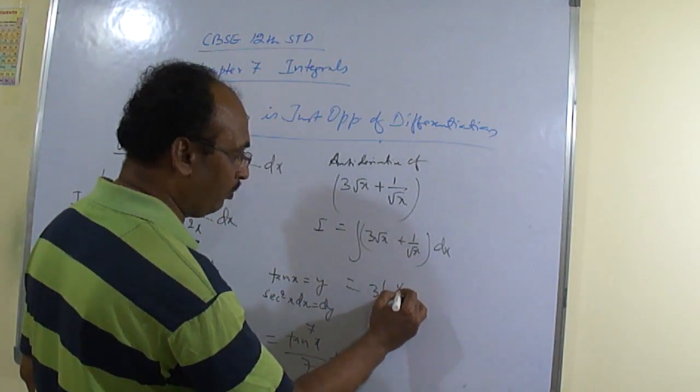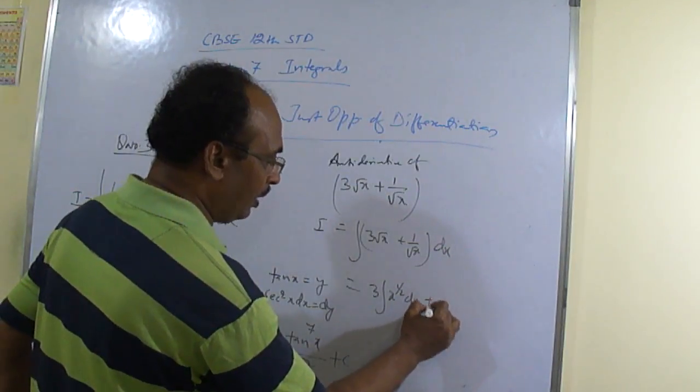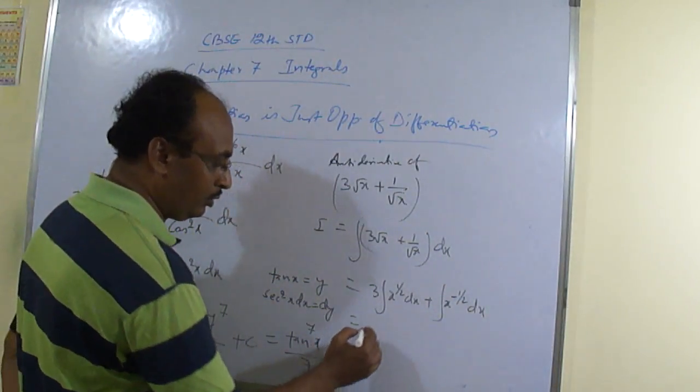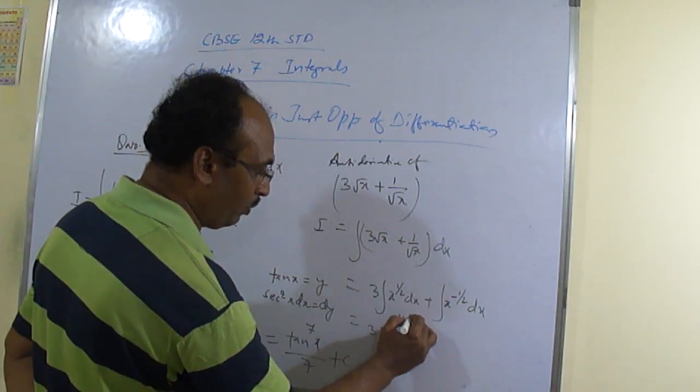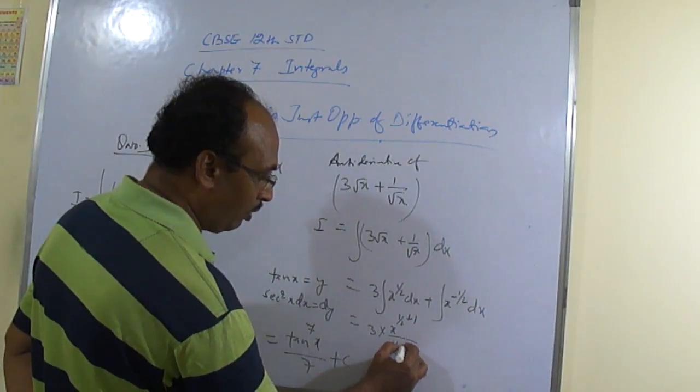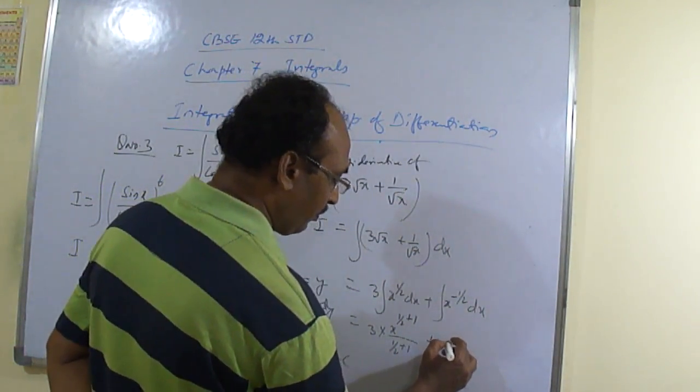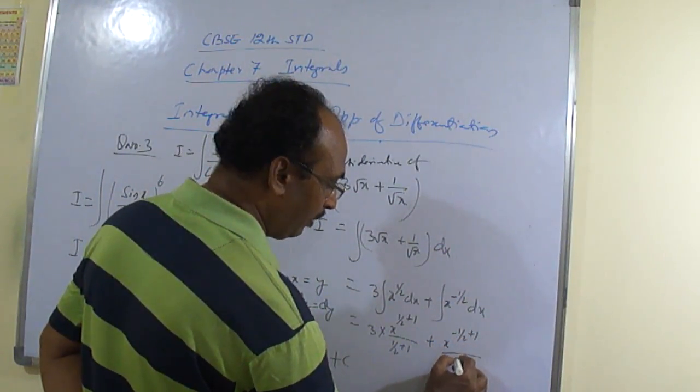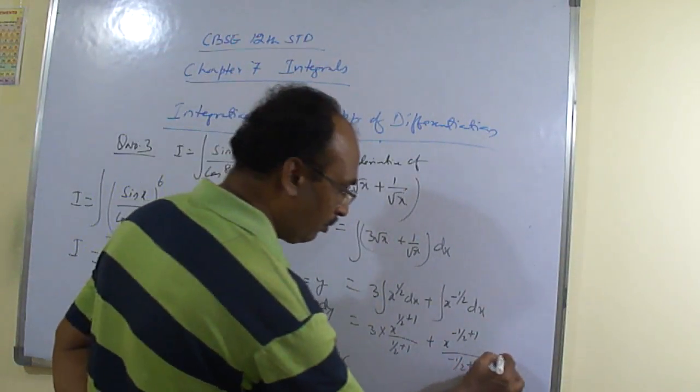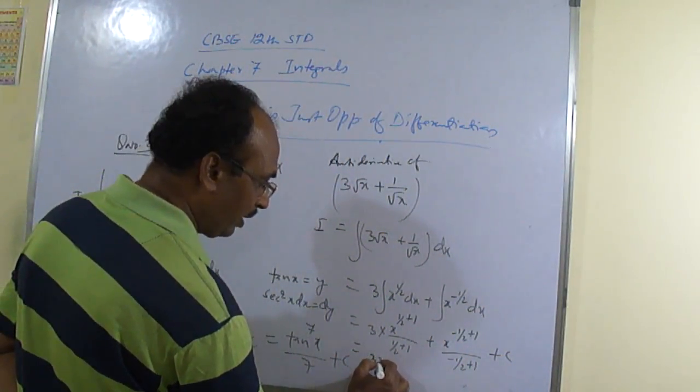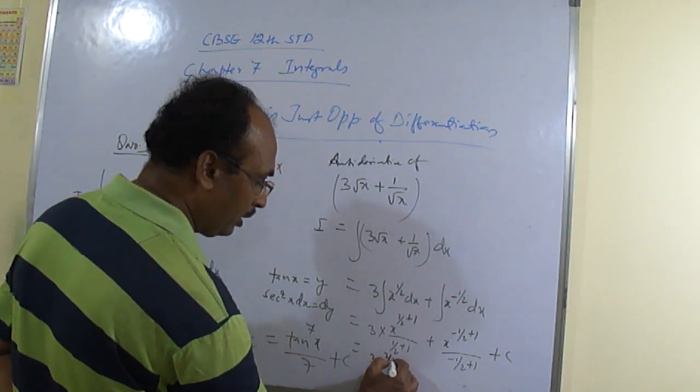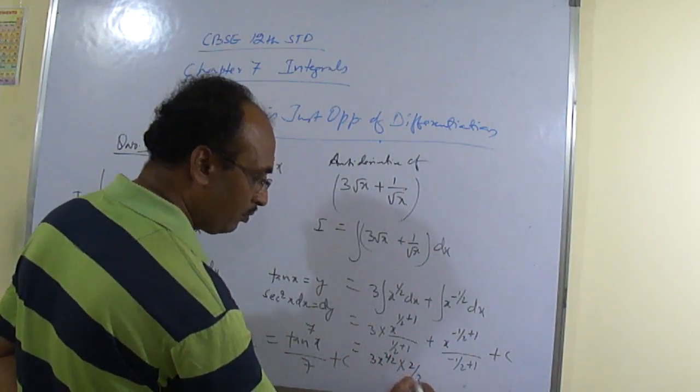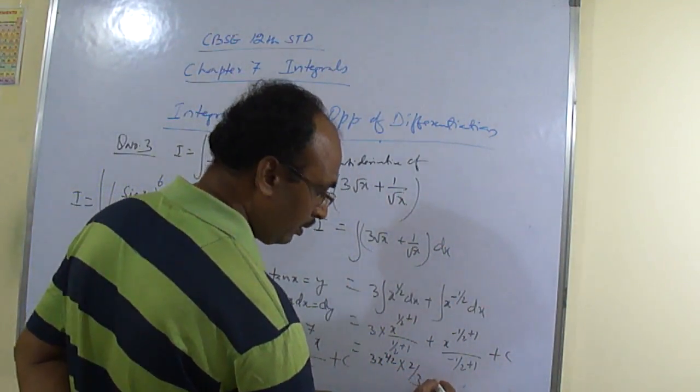So 3 x to the power 1 by 2 dx plus x to the power minus 1 by 2 dx. Yes, sir. dx. Okay. So 3 into x to the power 1 by 2 plus 1 divided by 1 by 2 plus 1 plus what? x to the power minus 1 by 2 plus 1. Yes or no? Yes. Plus c. So what we are getting here? 3 x to the power 3 by 2. And into. So here also 2 by 3. Yes or no? Yes. Okay.